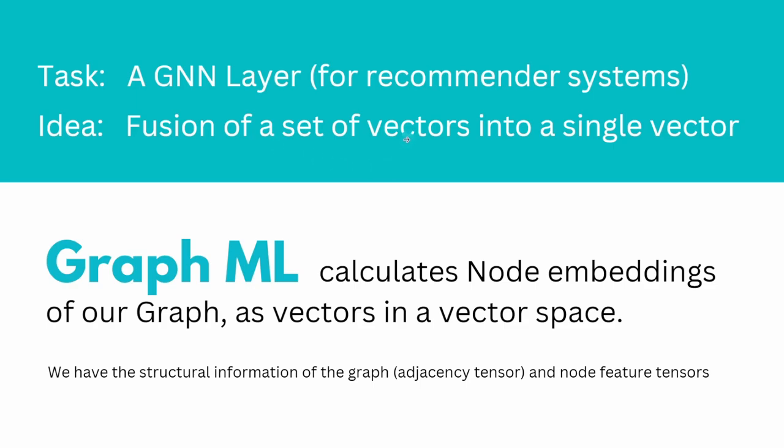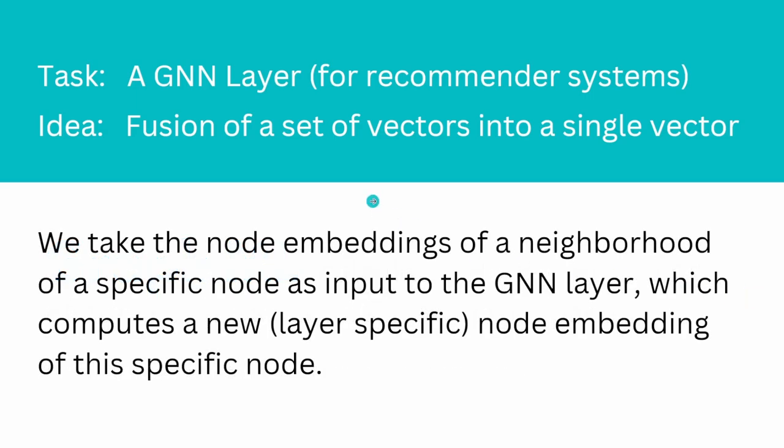You take a set of vectors, you combine those vectors in a specific way, and you build a new single vector which has new information. So we have the structural information of the graph in our adjacency tensor and we have the node feature tensors. First step is we take the node embeddings of a neighborhood of a specific central node. Those node embeddings of the neighborhood are the input to our graph neural network layer. And this layer computes a new node embedding for this specific node. So we integrate the neighborhood information into the node embedding at the next step.